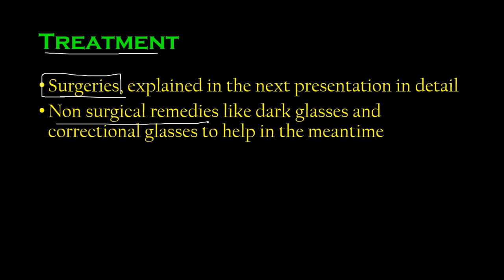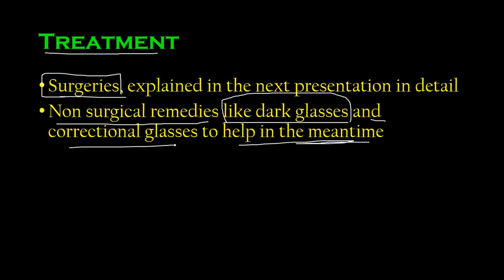Treatment of cataracts is primarily surgical. There are also non-surgical remedies, though these are not cures — just management in the meantime. These include wearing dark glasses: when wearing dark glasses the pupils remain more open, reducing the chance of light hitting the cataract directly and reducing glaring and halo formation. Corrective glasses are also used, because cataracts can cause refractive issues like myopia.